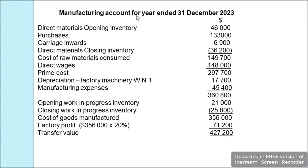Now let's prepare the manufacturing account for the year ended 31 December 2023. We start with direct material opening inventory of $46,000, plus purchases of $133,000, plus carriage inwards of $6,900, less closing inventory of $36,200, giving cost of material consumed of $149,700. Adding direct wages of $148,000 gives prime cost of $297,700.